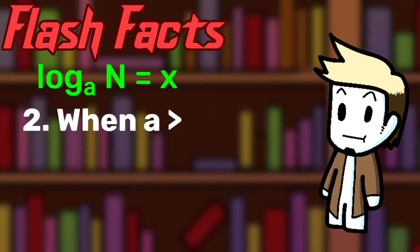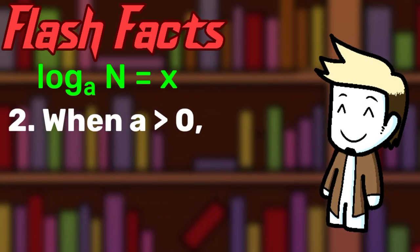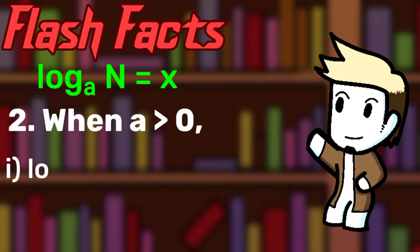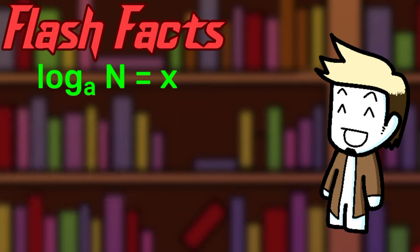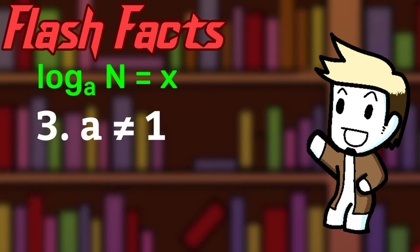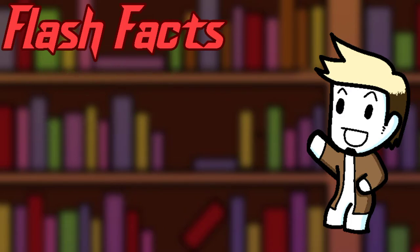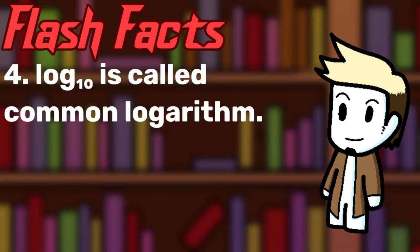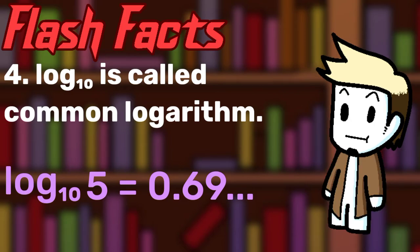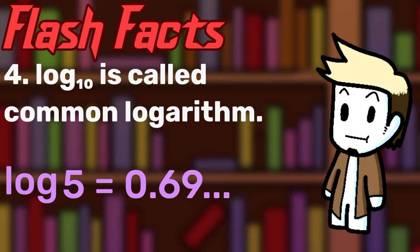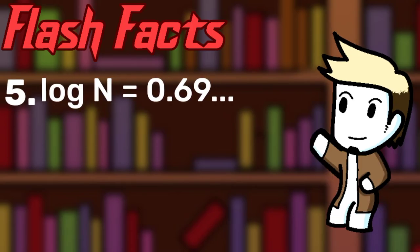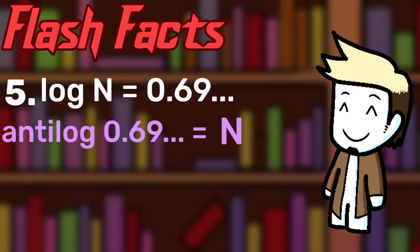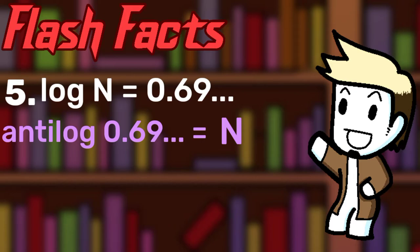Number 2: when the base is more than 0, the following statements will be true — log base A of 1 equals 0, and log base A of A equals 1. Number 3: 1 is usually not used as a base for logs. Number 4: logs with base 10 are called common logarithms, and they can also be written as just log. Number 5: if the value for the number of a common log is given, you can use a scientific calculator to determine the number using the anti-log feature.